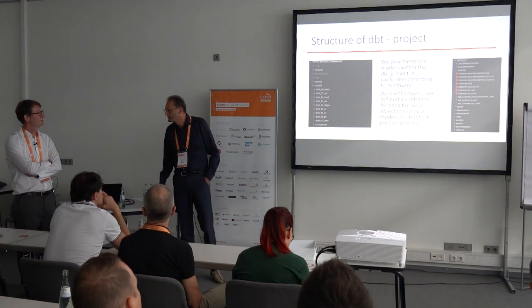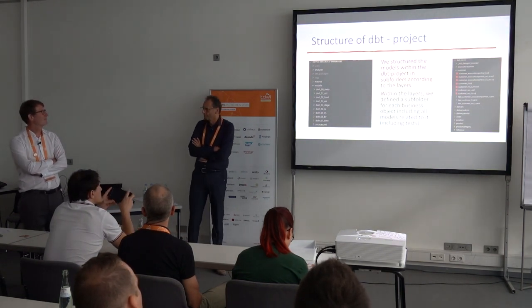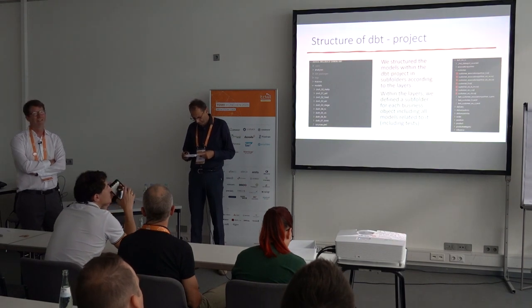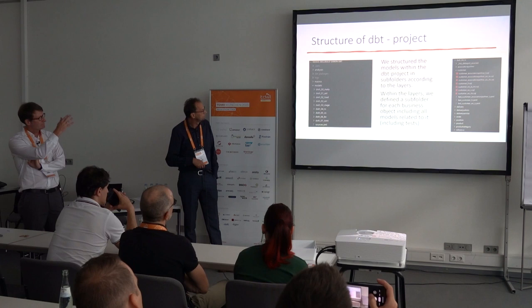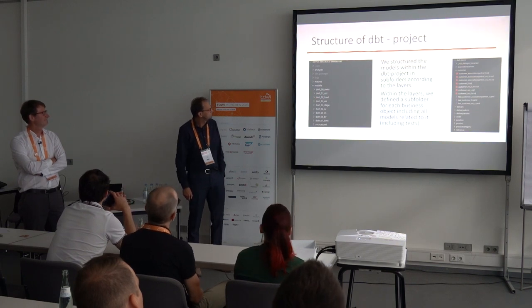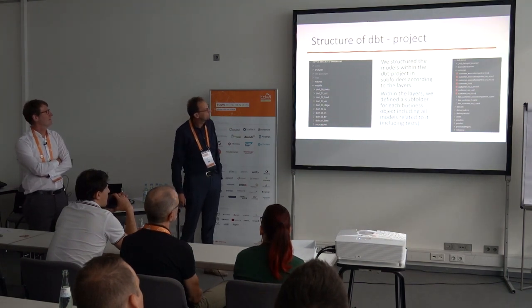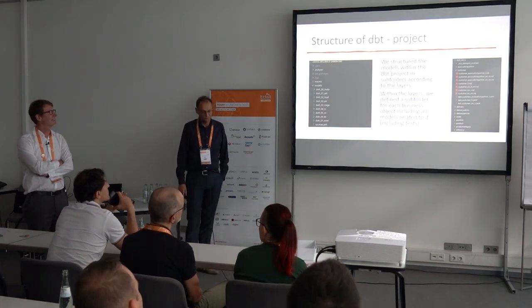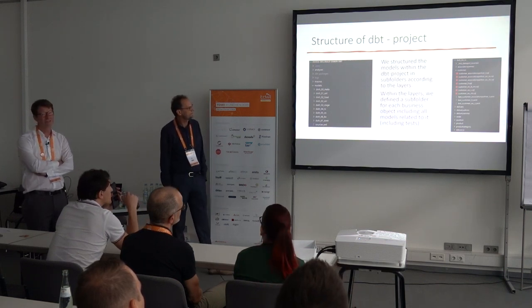This is the structure of the dbt project we used. We used Visual Studio Code. On the left side you see a subfolder called 'models' where all the models are placed. The subfolders below represent the different layers we defined — these are different schemas that will be generated. Further down, for example under the raw vault layer, all the entities and models are organized within the business objects they are attached to.